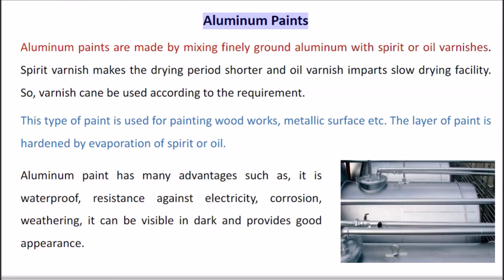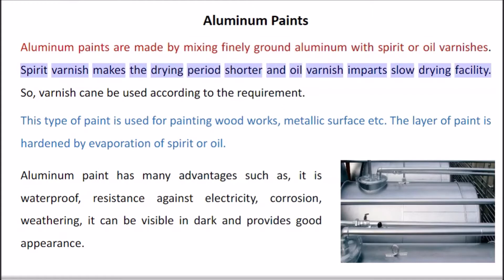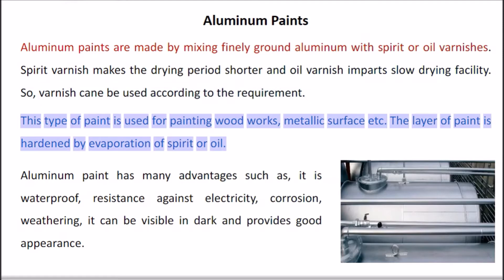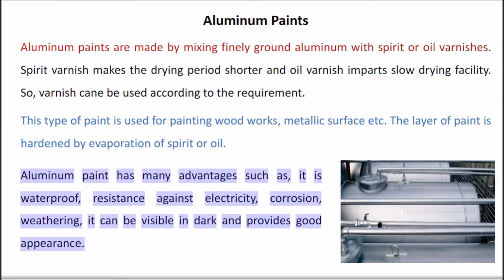Aluminum paints are made by mixing finely ground aluminum with spirit or oil varnishes. Spirit varnish makes the drying period shorter and oil varnish imparts slow drying facility, so varnish can be used according to the requirement. This type of paint is used for painting woodworks, metallic surfaces etc. The layer of paint is hardened by evaporation of spirit or oil. Aluminum paint has many advantages: it is waterproof, resistant against electricity, corrosion, and weathering, and provides good appearance.